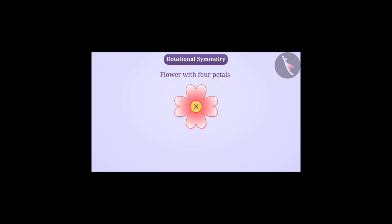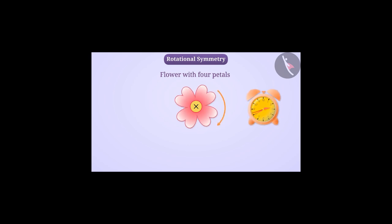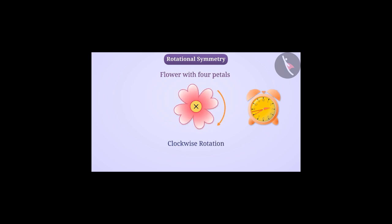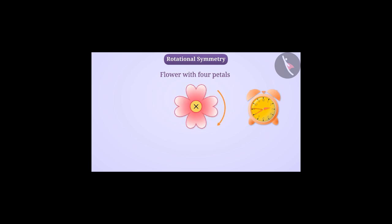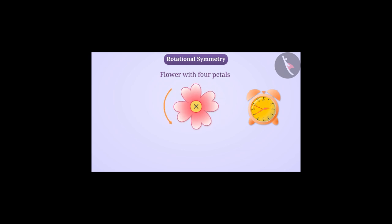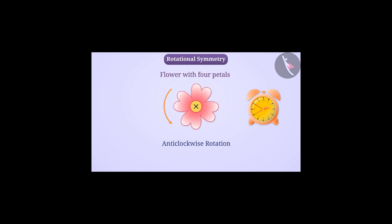Any shape can rotate in two directions. When the shape rotates in the direction of the clock needles, we say that it is rotating clockwise. Similarly, when the figure rotates counter-clockwise, we say that it is rotating anti-clockwise.